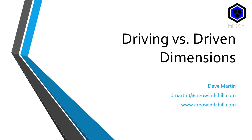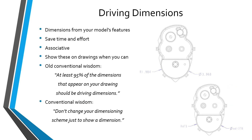In Creo Parametric, when you are detailing a drawing, you can use either driving or driven dimensions. Driving dimensions are dimensions that actually come from your model's features — when you are creating a sketch, an extrude, a revolve, a round, or a hole, you'll have different dimensions generated from those features, and you can show those driving dimensions on the drawing. If you create dimensions manually, those are called driven dimensions.